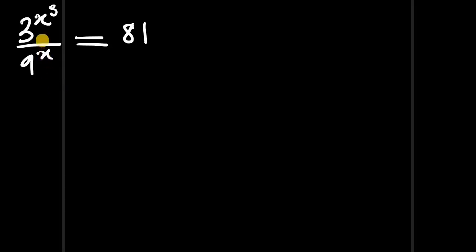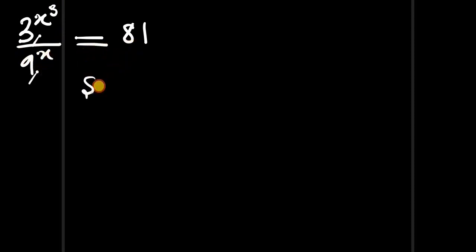Hello, in this video we are going to solve this problem. We have 3 to the power of x to the power of 3, divided by 9 to the power of x, and this is equal to 81. So we have to find the value of x.